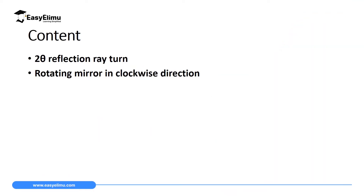By the end of this lesson I expect you to be able to explain the effect of rotation of a mirror on a reflected ray, and then finally using a ray diagram and the laws of reflection you prove that when a mirror is rotated at an angle theta, then the reflected ray will rotate twice the angle of rotation of the mirror.